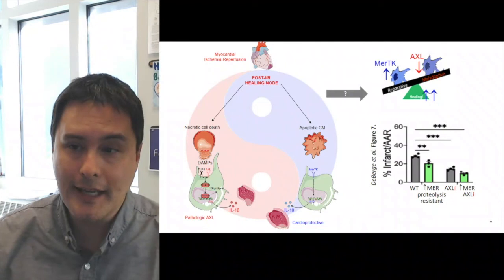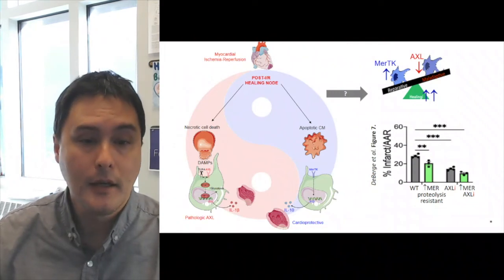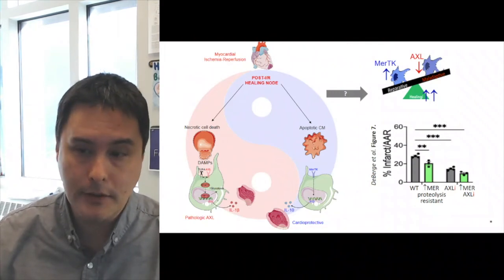So if indeed our working model is correct, then one prediction is that enhancing MERTK while concomitantly decreasing AXL, this should lead to a combinatorial effect to promote the most optimal healing phenotype.